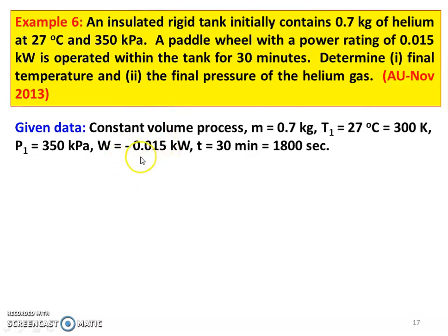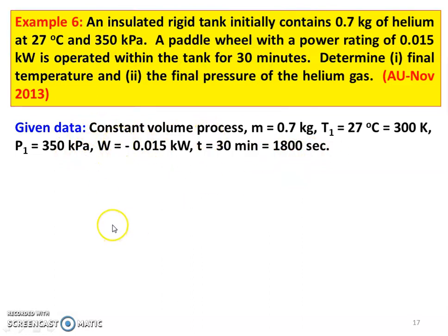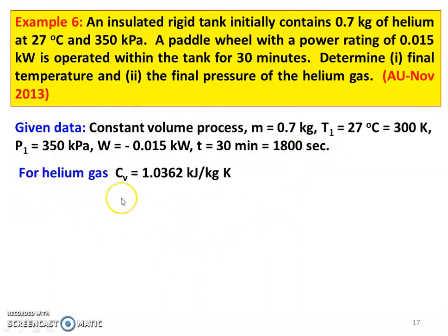This is a constant volume process — a rigid insulated tank. Given data: mass equal to 0.7 kg, T1 equal to 27 degrees Celsius which is 300 Kelvin, P1 equal to 350 kilopascal, work done on the system equal to 0.015 kilowatt, time equal to 30 minutes which is 1800 seconds. For helium gas, Cv equal to 1.0362 kilojoules per kilogram Kelvin.